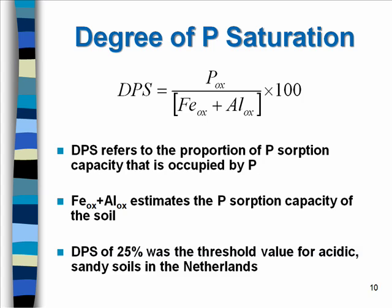So the significance of P loss depends on two factors: the concentration of phosphorus and the sorption capacity. The tool used nowadays in some states is the degree of phosphorus saturation — the proportion of phosphorus sorption capacity that is occupied by phosphorus. The summation of oxalate iron plus aluminum estimates the sorption capacity of the soil, and the numerator is the oxalate phosphorus, which represents the amount of phosphorus already occupying that capacity.